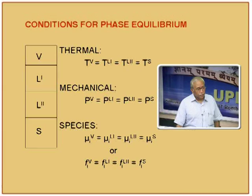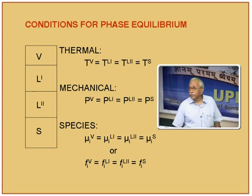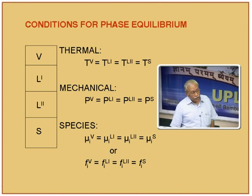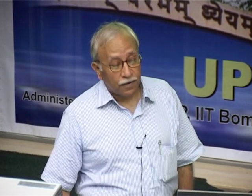Thermal equilibrium requires that the temperatures of all four phases are identical. Then we have mechanical equilibrium, which requires that the pressure in all four phases is equal. If these are in chemical equilibrium, the additional condition is that the chemical potential of the ith species — in a multi-component system — should be identical in all four phases. This chemical potential is related to the Gibbs free energy.